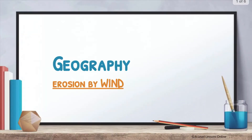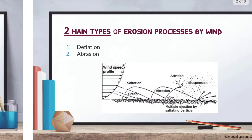Hey guys, welcome back to A-level lessons. In this video we're going to be looking at the next part of physical geography covering erosion by wind. We're going to be looking very specifically at two erosion processes that occur when wind is present. This will be highly applicable to areas such as aeolian processes, aeolian environments, and aeolian landforms — anything to do with wind.